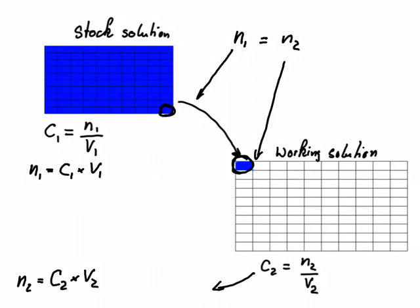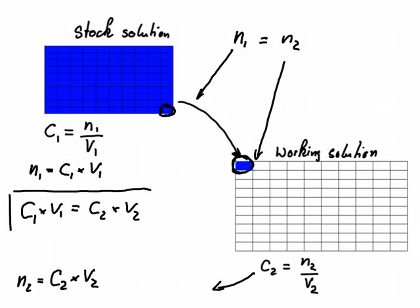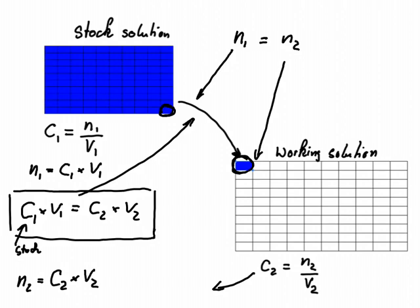With this we get the really important equation: C1 times V1 equals C2 times V2. That's a really useful equation. If we know the concentration of our stock solution and the volume we have taken out, we can easily calculate the concentration of the working solution if we also know the total volume. In some further examples I will go through these calculations and show you how this is done.